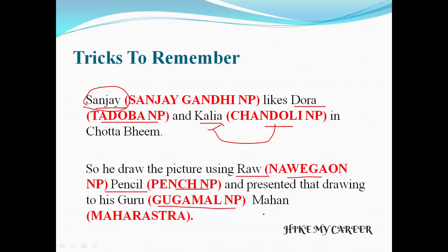He presented the drawing to his guru, and the guru's name is Magan. Guru means Gugamal National Park. Magan means Maharashtra. So the story for Maharashtra state is: Sanjay likes Dora and Kaliya in cartoon channel, he draws the picture using a raw pencil, and presents the drawing to his guru — guru name is Magan.